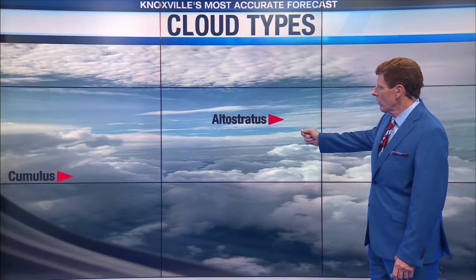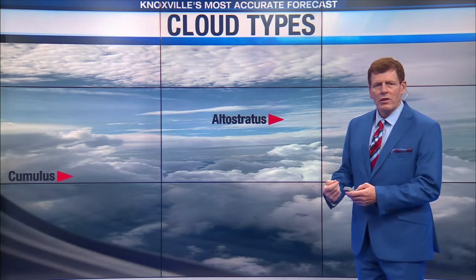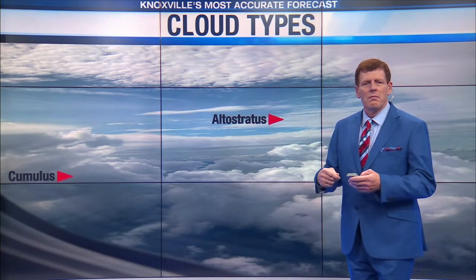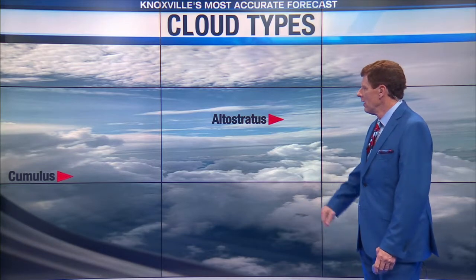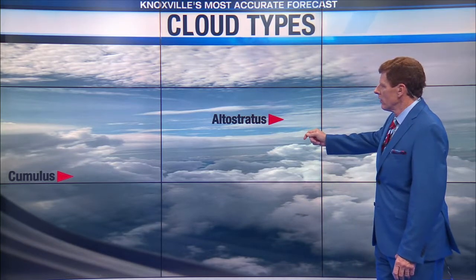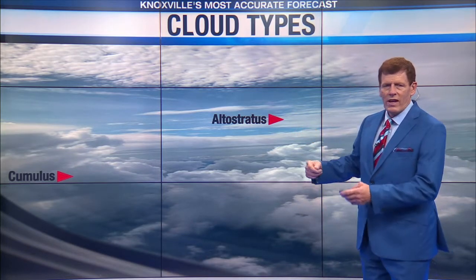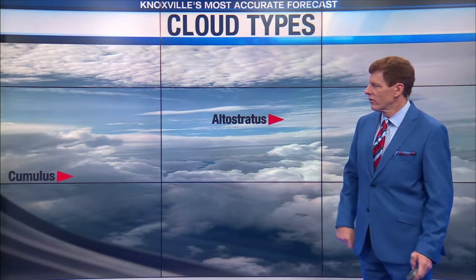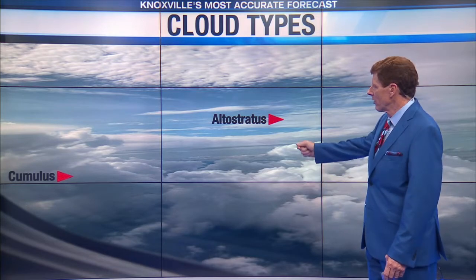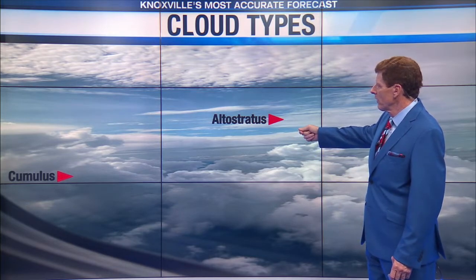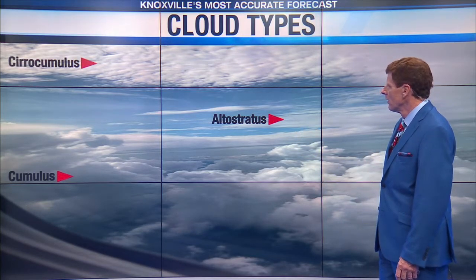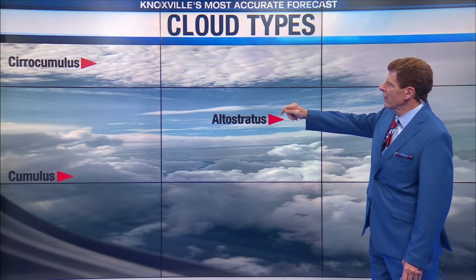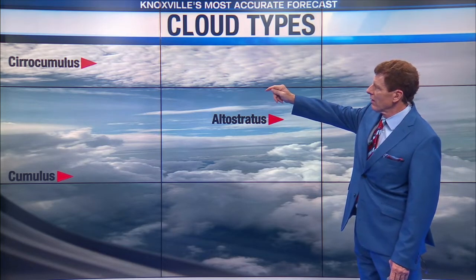How about alto stratus? Keep in mind the word 'alto' means mid — mid-level up in the atmosphere. 'Stratus' means stratified or stretched. So a stretched cloud that's in the mid-level of the atmosphere — we would know that as an alto stratus cloud.